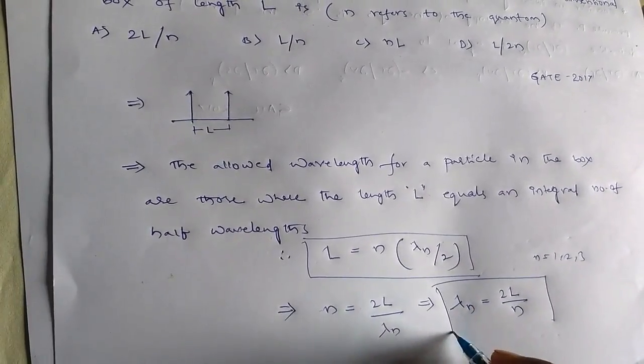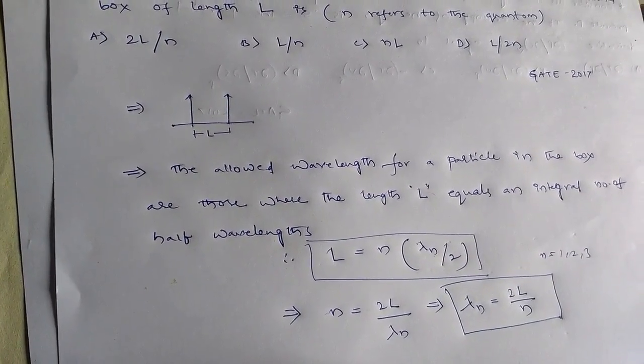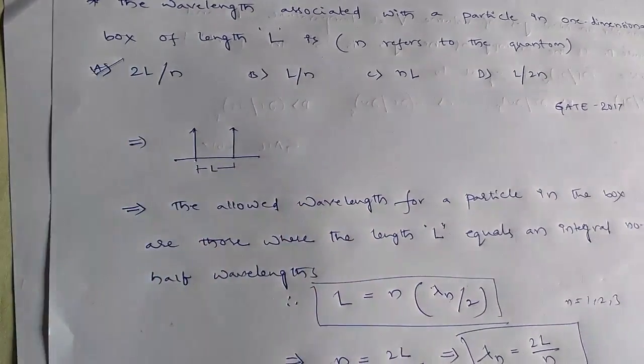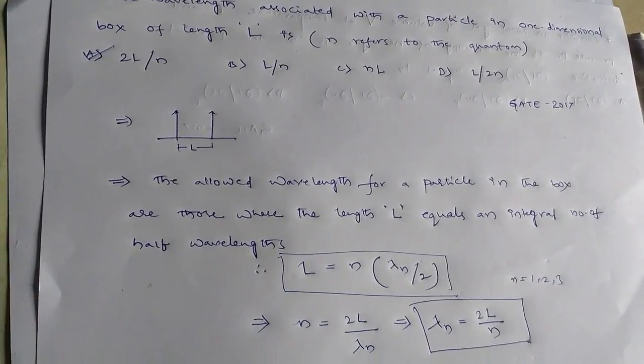So option A is equal to 2L by n. So option A is the correct answer for the given problem.